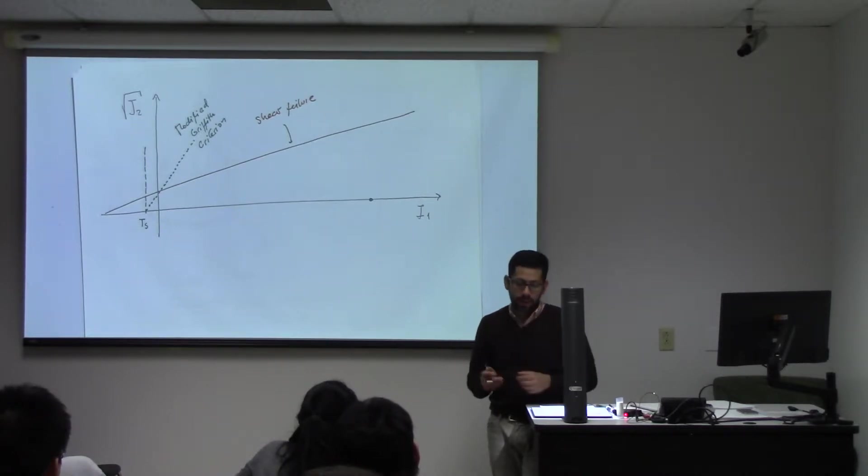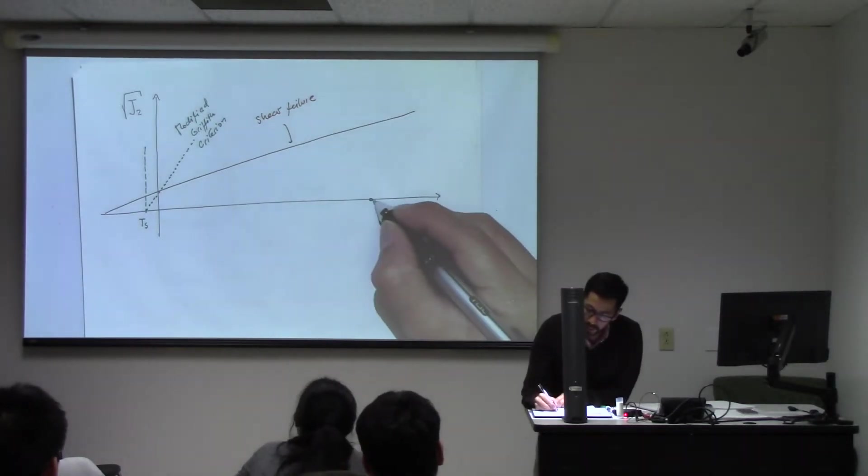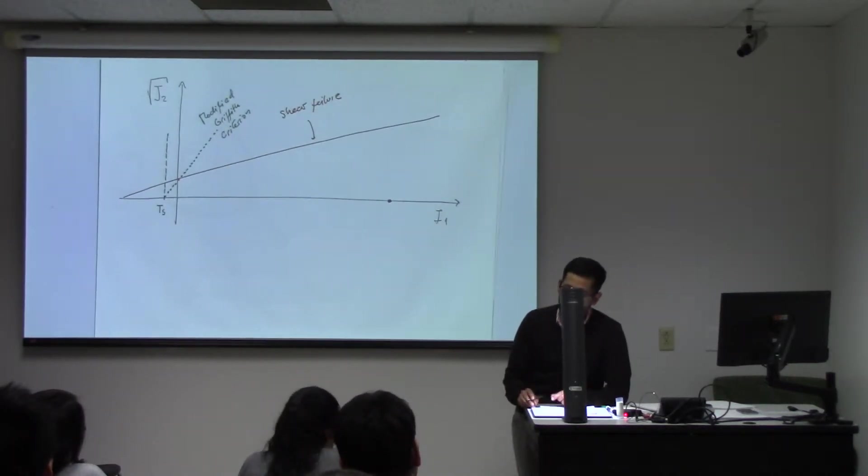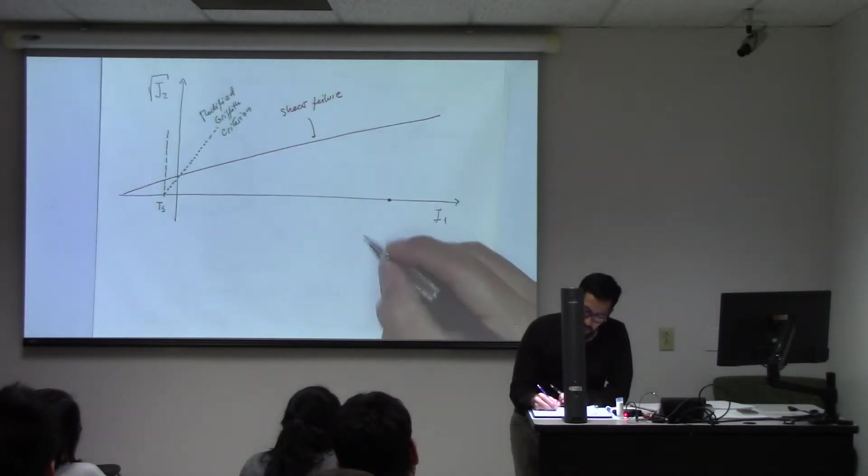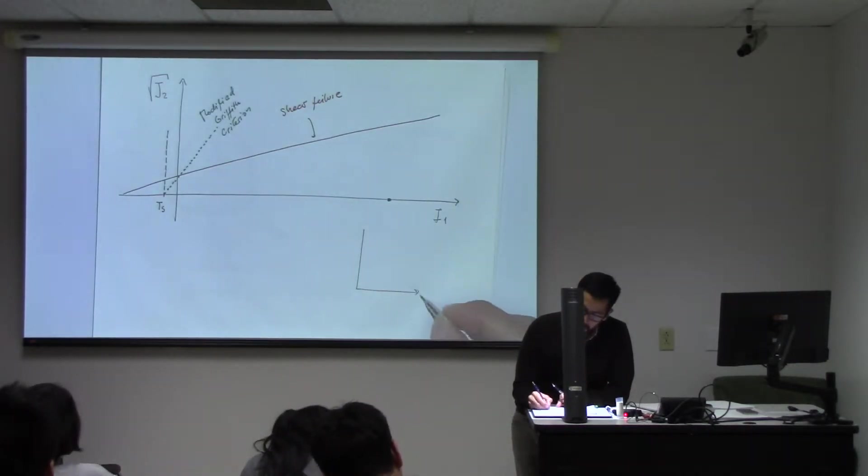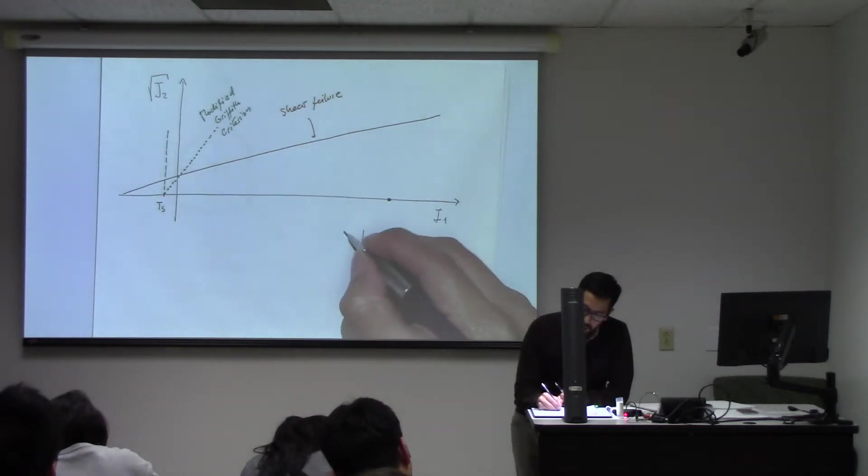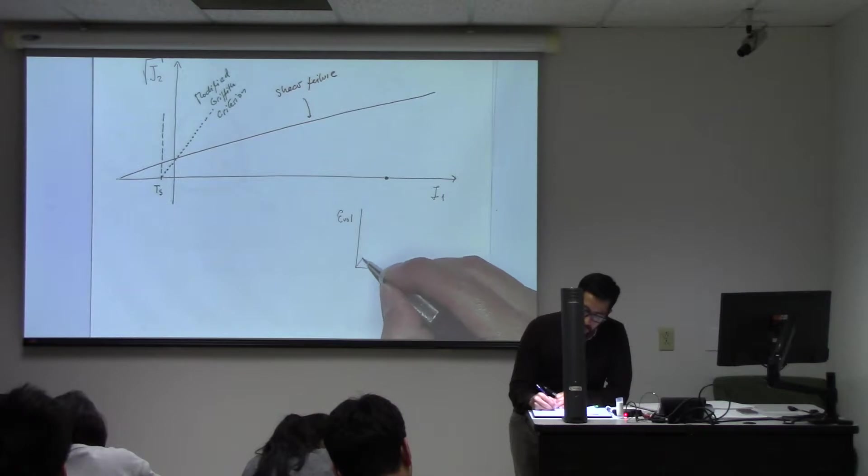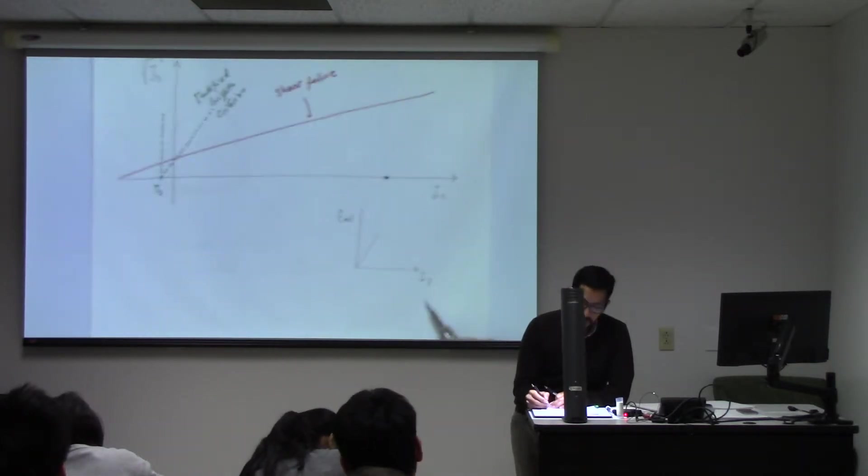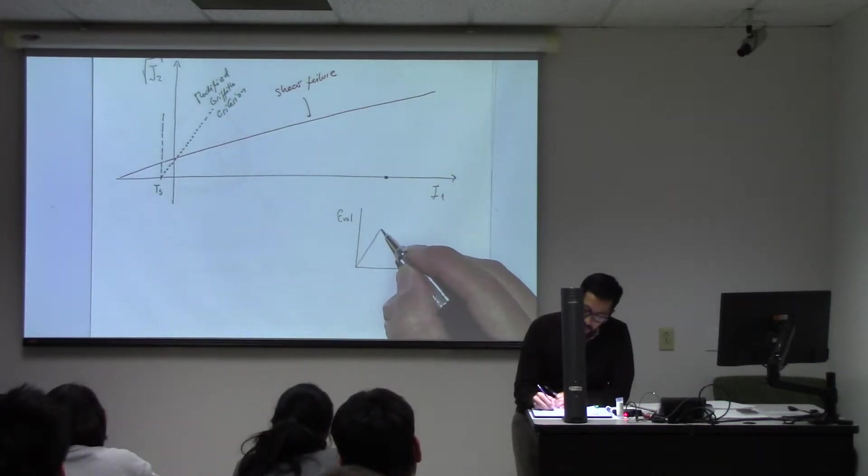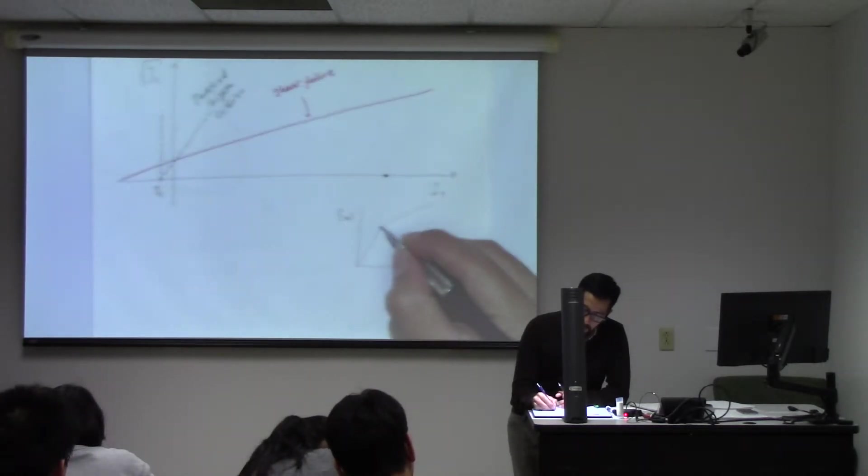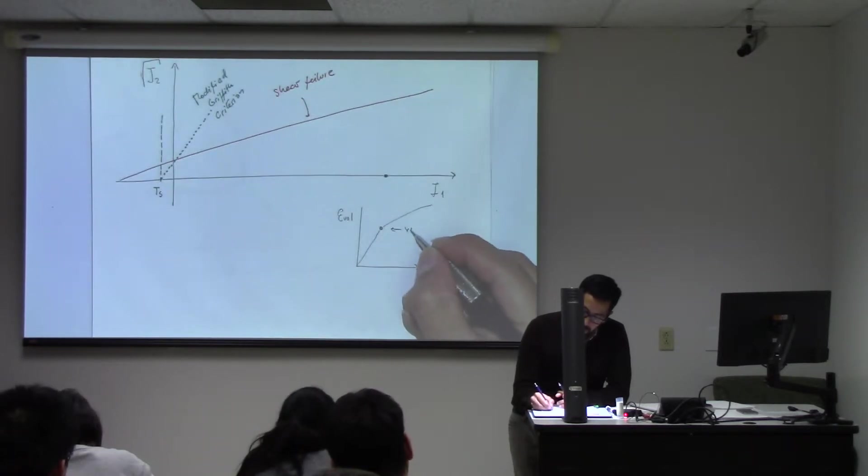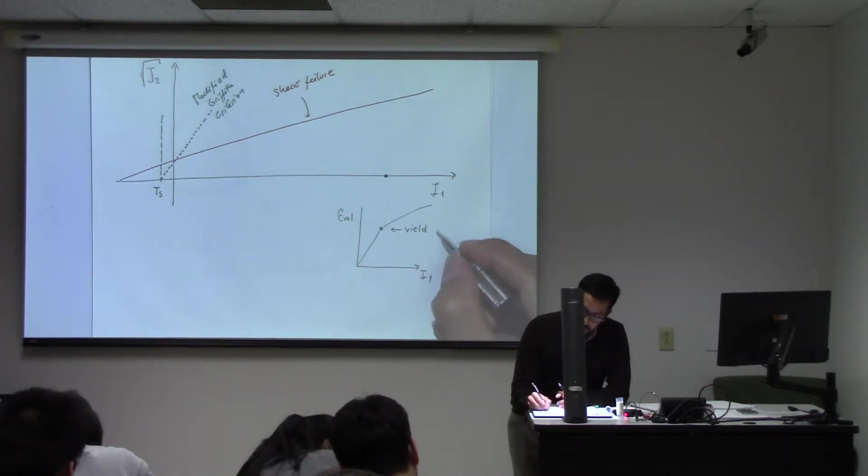So usually for that, this point over here, instead of measuring a peak stress, we will measure - imagine that we're increasing I1 and we measure volumetric strain. In this case, we will increase the compression to the point that we start to see that it deviates. And probably it may be like that, but that's what we call a yield stress.